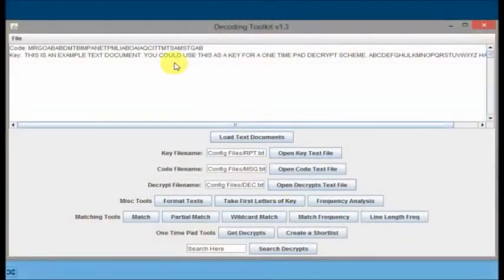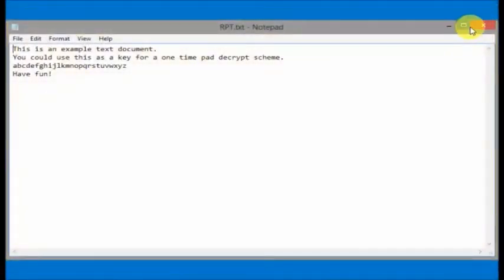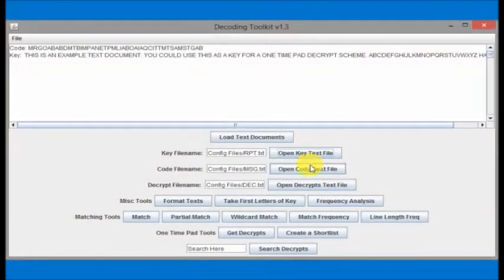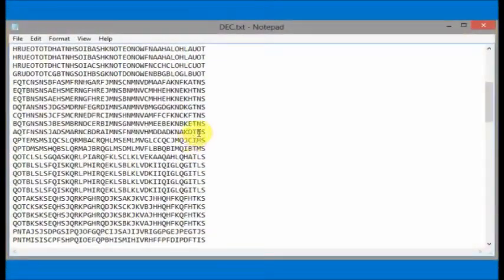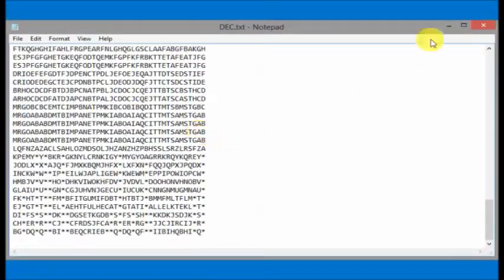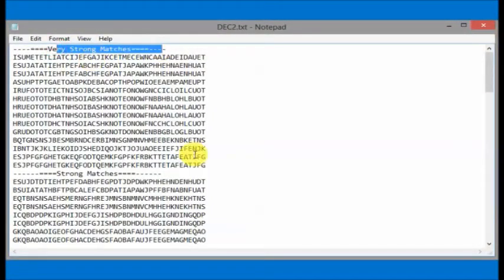The decoding toolkit was originally created so that we could use the text of the Persian poetry book connected with the case as a one-time pad decryption key to try and decrypt the code. Unfortunately, this resulted in no matches.